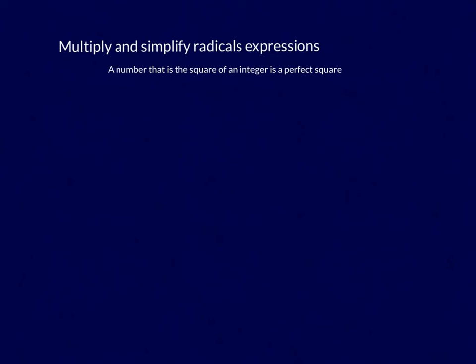This video takes a look at simplifying and multiplying radical expressions. The first thing you need to know is that a number that is the square of an integer is said to be a perfect square. So if I have 10 squared, that equals 100, and 100 is said to be a perfect square. Just like x squared, x to the fourth, or x to the sixth — those are all perfect squares.